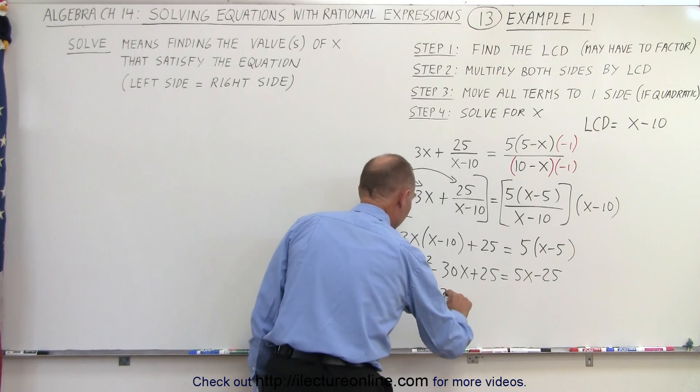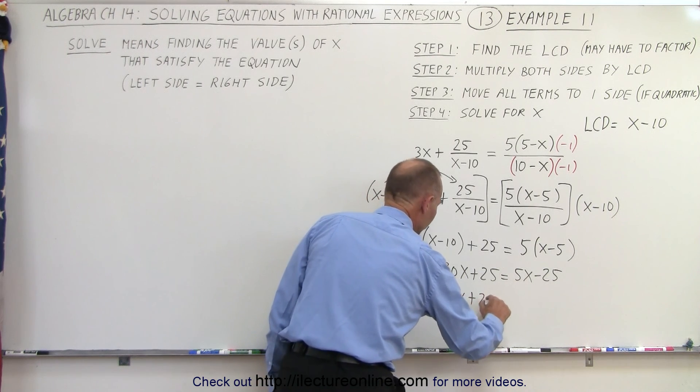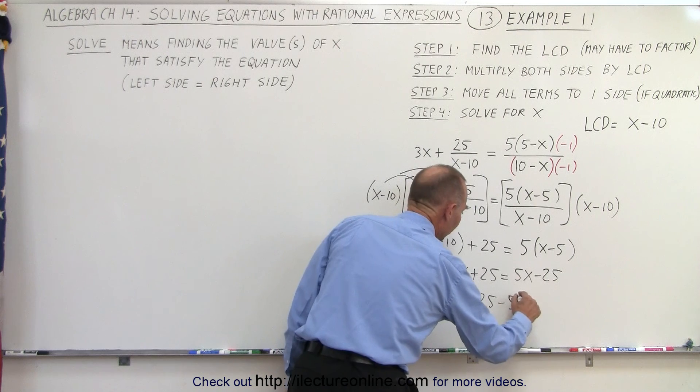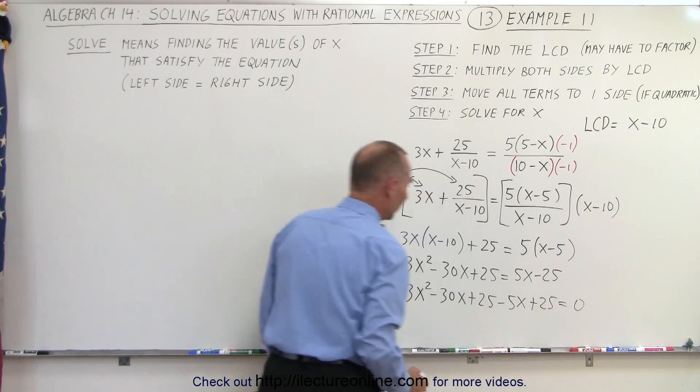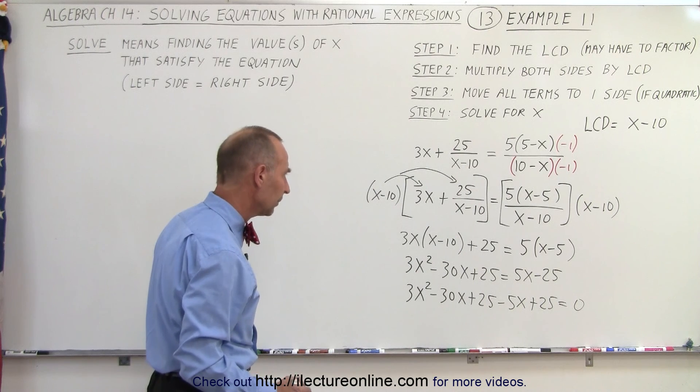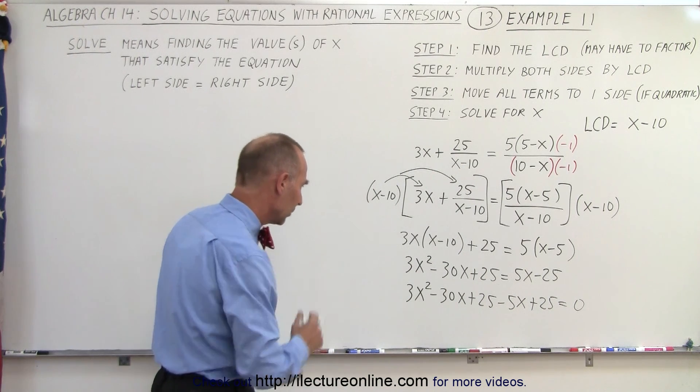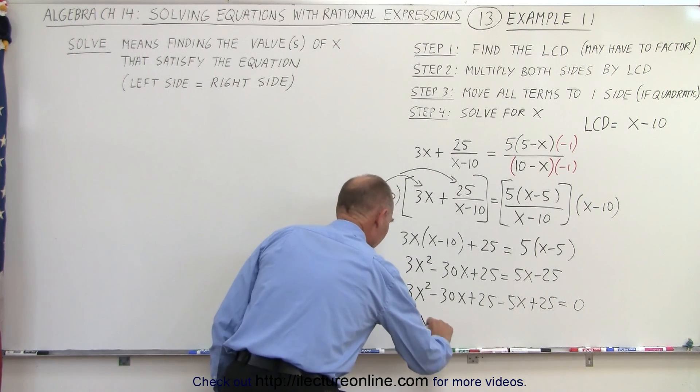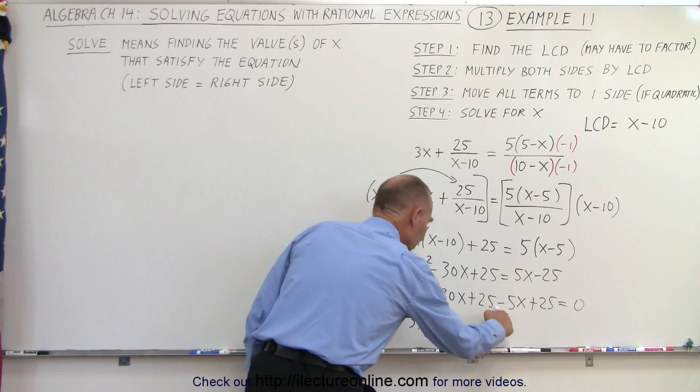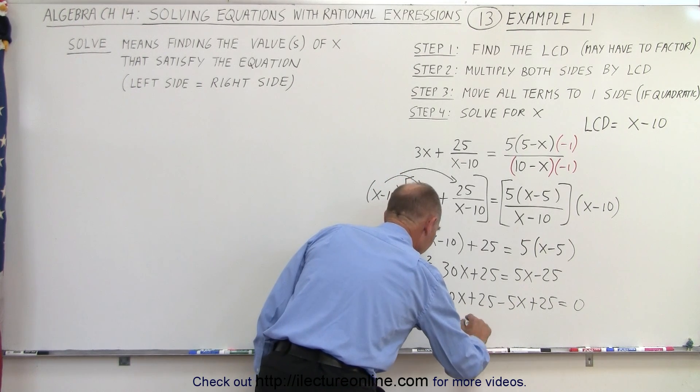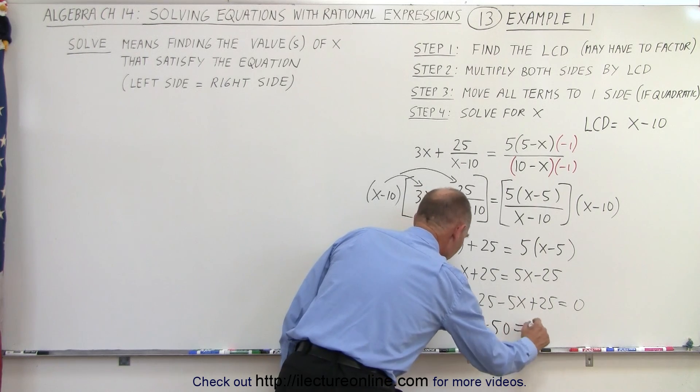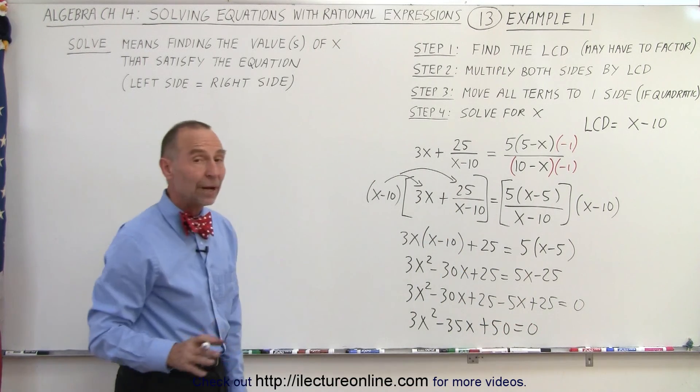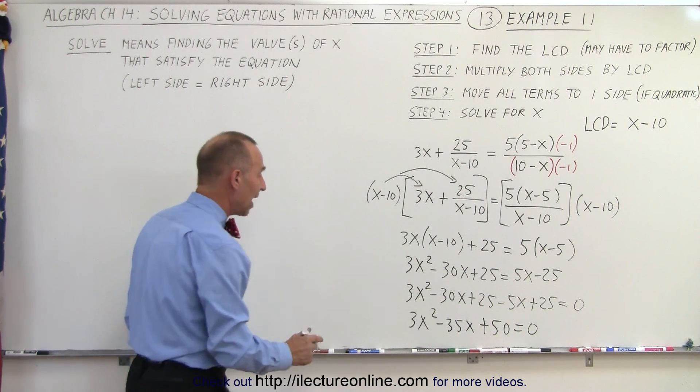so I'm going to move everything over to one side. 3x squared minus 30x plus 25 minus 5x plus 25 equals 0. And so now I'm going to collect common terms. We get 3x squared minus 30 minus 5 is minus 35x,